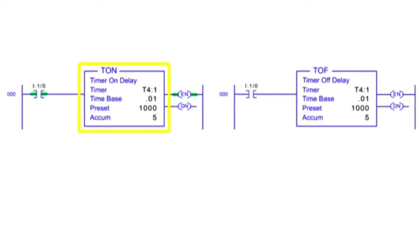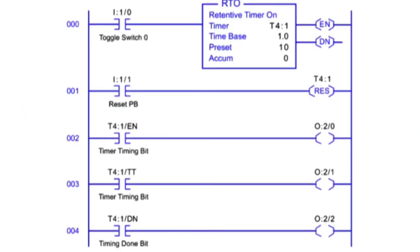Timer On and Off Delays reset when the input conditions change true or false depending on the timer type. For applications requiring the accumulated time to be retained if there were a system fault or the input condition goes false, a Retentive Timer On is used.